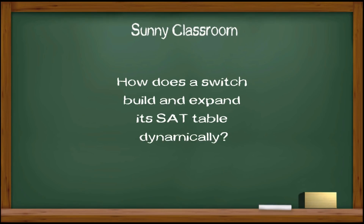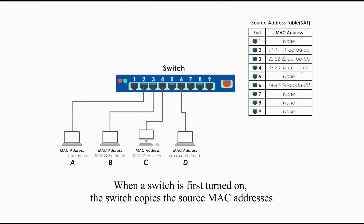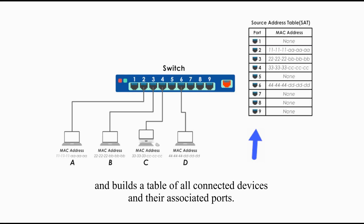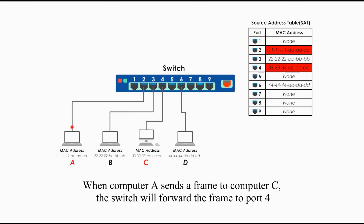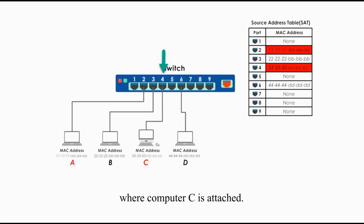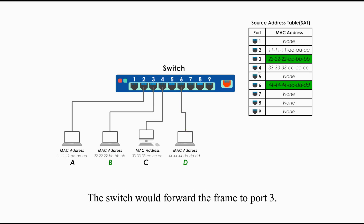How does a switch build and expand its SAT table dynamically? When a switch is first turned on, the switch copies the source MAC addresses and builds a table of all connected devices and their associated ports. This table is a source address table. When computer A sends a frame to computer C, the switch would forward the frame to port 4 where computer C is attached. The same is true when computer D sends a frame to computer B — the switch would forward the frame to port 3.